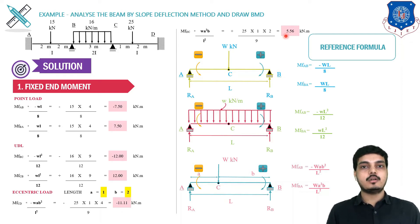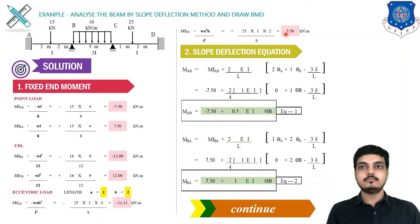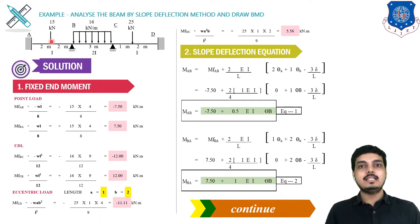Please make sure you apply the correct formula for the given loading without making any mistakes. This completes Step 1 — fixed end moments. Now our next step is the slope deflection equation. For 3 spans there will be 6 equations in total — each span contributes 2 equations, one for the left end and one for the right end.